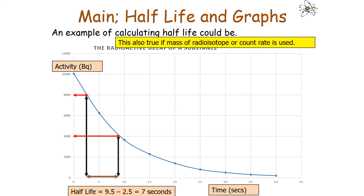At an activity of 8,000, the time is 2.5 seconds. At an activity of 4,000, the time is 9.5 seconds. The half-life is the difference between the two times: 9.5 − 2.5 = 7 seconds. So the half-life for this radioisotope is 7 seconds.